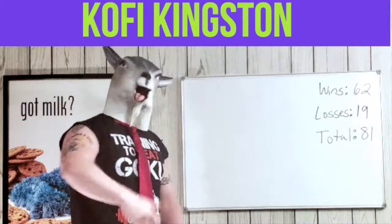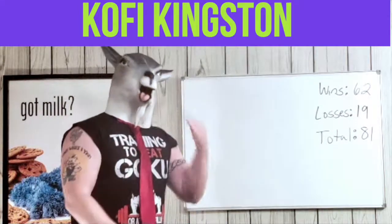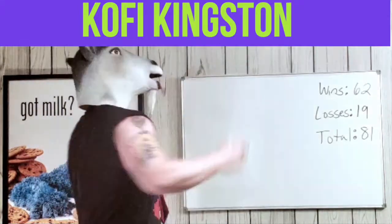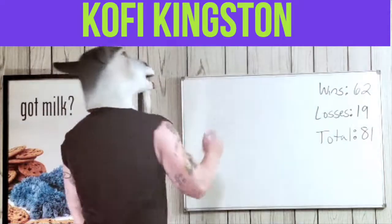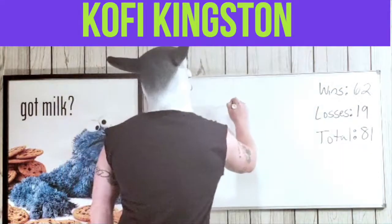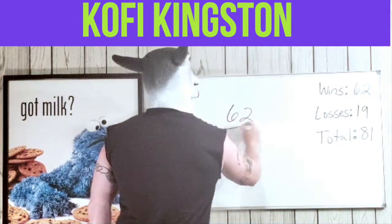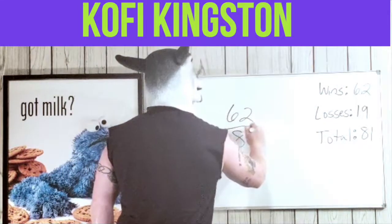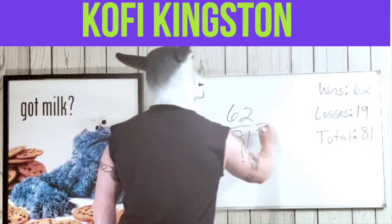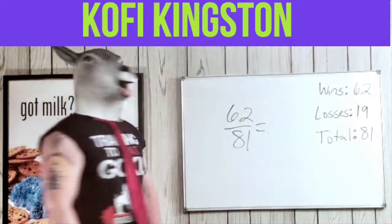So the first thing we'll do is make it a fraction. We're gonna write it as a fraction: 62 over 81.